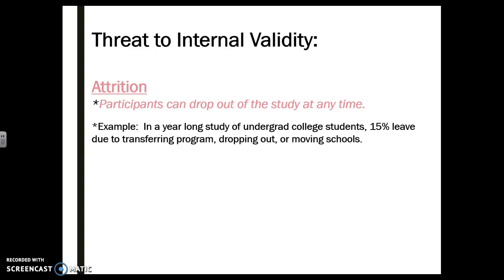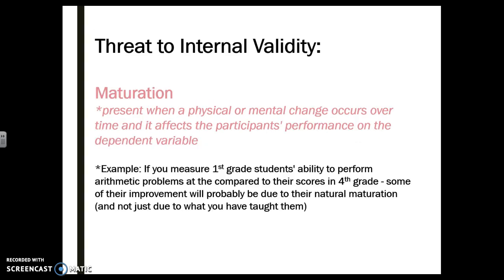Attrition is a problem in most studies, especially over studies with a long period of time — this has to do with people dropping out. If you have a really large sample size, 15% dropout is maybe not a big deal, but if you don't have a huge sample size, 15% could be devastating. Maturation literally means the participants have matured between your pre and your post. If we're trying to understand first grade versus fourth grade performance, is it the curriculum and knowledge that changed, or is it that they are simply more mature and can focus on the test?